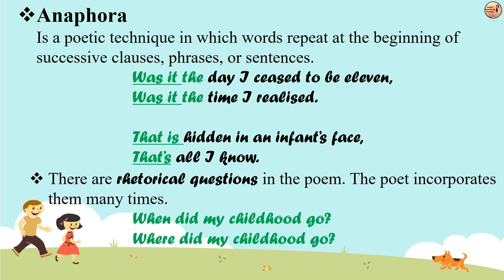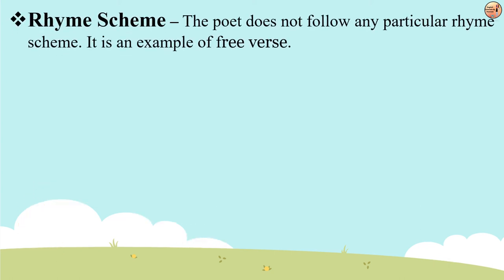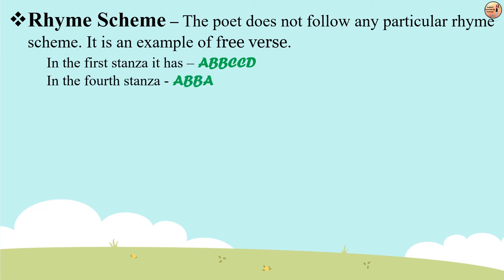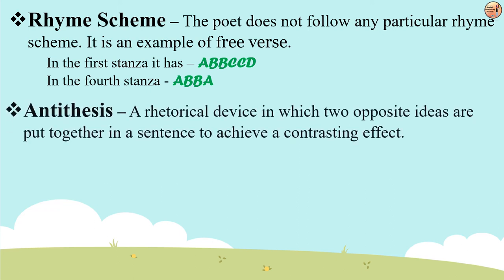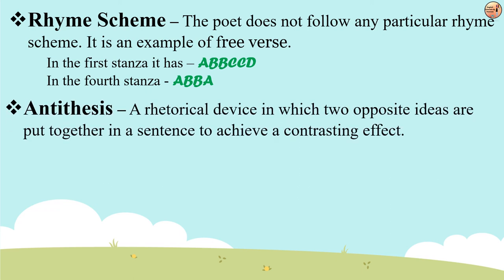There are rhetorical questions in the poem, such as 'When did my childhood go?' and 'Where did my childhood go?' Regarding rhyme scheme, the poet does not follow any particular rhyme scheme overall — it is an example of free verse. But in the first stanza alone it has rhyme scheme A, B, B, C, C, D, and in the fourth stanza the rhyme scheme is A, B, B, A. Next we have antithesis — a rhetorical device in which two opposite ideas are put together. The example from the poem is 'hell and heaven.'